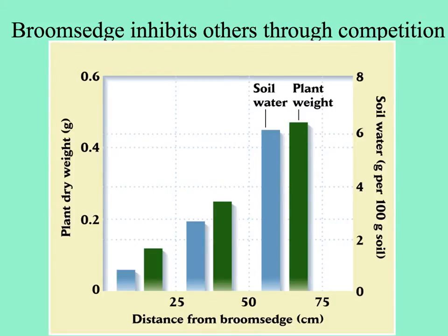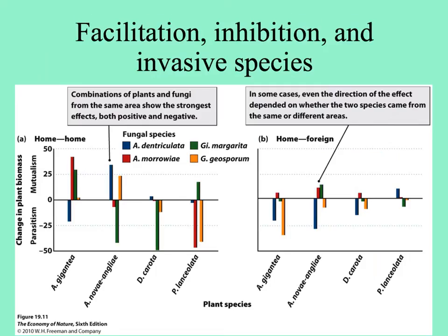Here's an example of inhibition. The broom sedge outcompetes others by its rampant, rhizomatous, vigorous growth. Plants do better the farther they are from a broom sedge—greater plant weight and more water—because broom sedges are really water hogs. In this study, plants and fungi that were co-evolved and native to the same place showed the strongest effects on one another, both positive and negative.